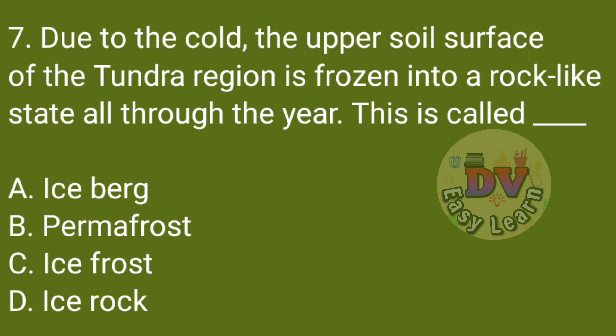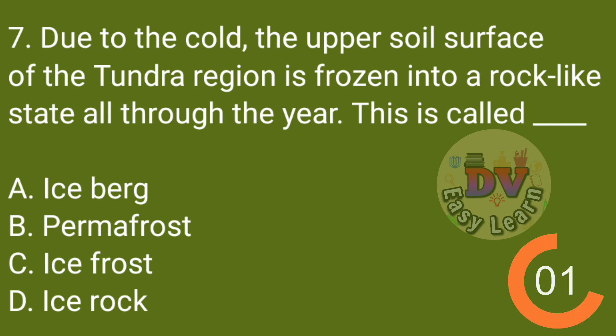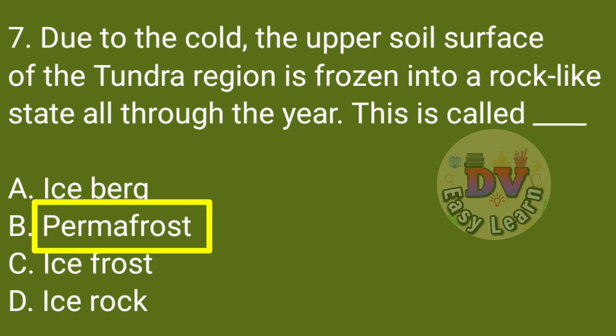Q7: Due to the cold, the upper soil surface of the Tundra region is frozen into a rock-like state all through the year. This is called? Correct answer: Permafrost.